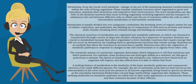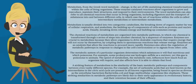The metabolic system of a particular organism determines which substances it will find nutritious and which poisonous. For example, some prokaryotes use hydrogen sulfide as a nutrient, yet this gas is poisonous to animals. The speed of metabolism, the metabolic rate, influences how much food an organism will require, and also affects how it is able to obtain that food.